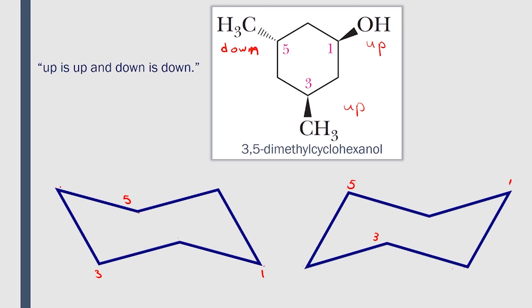To make it easier for us, let's draw the axial positions for the two chair conformations first. The axial position at carbon 1 here would be down, carbon 2 would be up — so we have down, up, down, up, down, up in alternating positions.